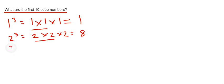So our next cube number will be 3 cubed, which is 3 times 3 times another 3. So again, work out 3 times 3, that's 9. And 9 times 3 is 27.